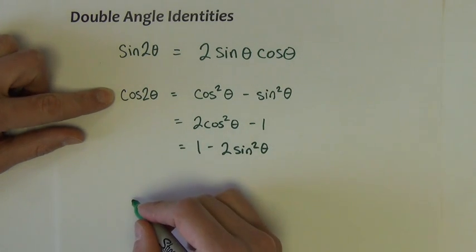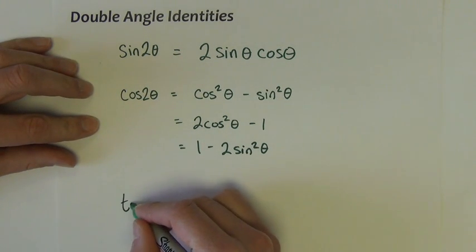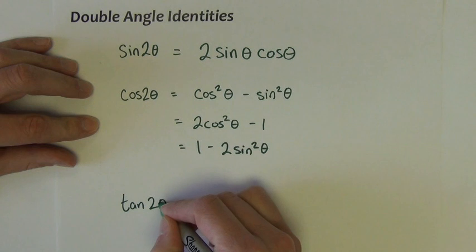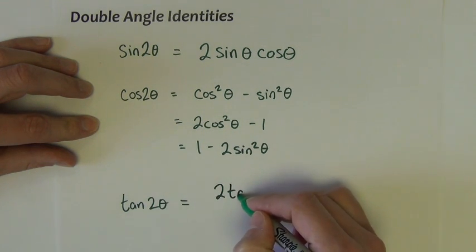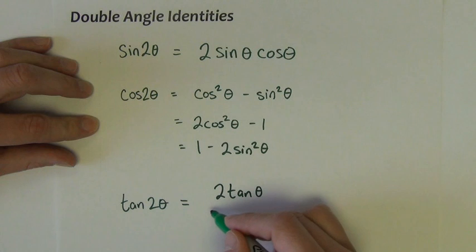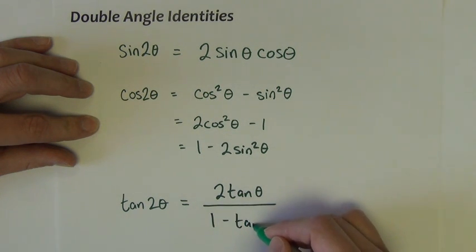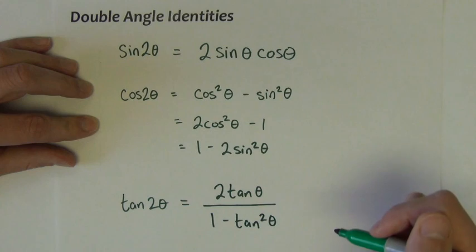The last one is for tangent. Tangent of 2 theta is equal to 2 tangent theta over 1 minus tangent squared theta.